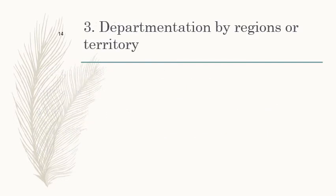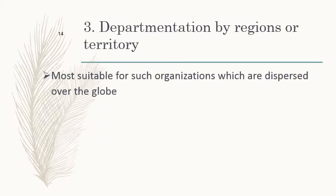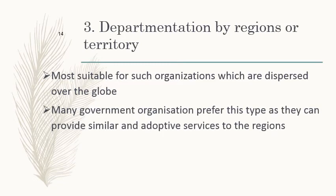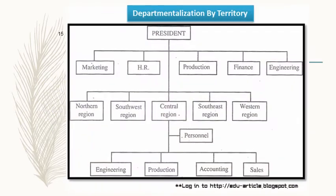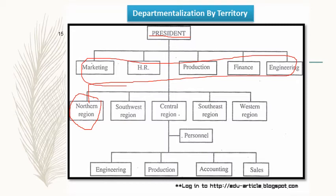The third form of departmentation is by regions or territory, most suitable for organizations dispersed across the globe or a large area. Many government organizations prefer this type as they can provide similar and adaptive services to different regions. Under the president, common functions like marketing, HR, production, finance, and engineering exist, and under those, separate regional divisions like northeastern, southwest, central, southeast, and western regions each carry out these functions.